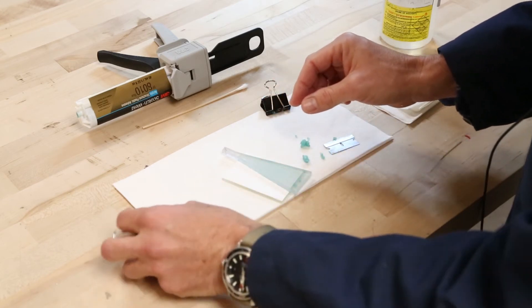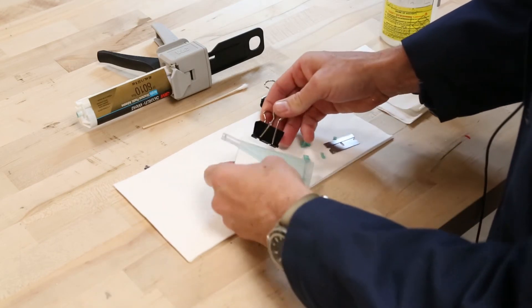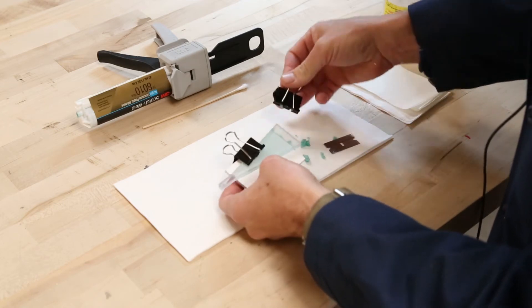Then I'll put the binder clips back on and place it back in the oven for it to set up overnight.